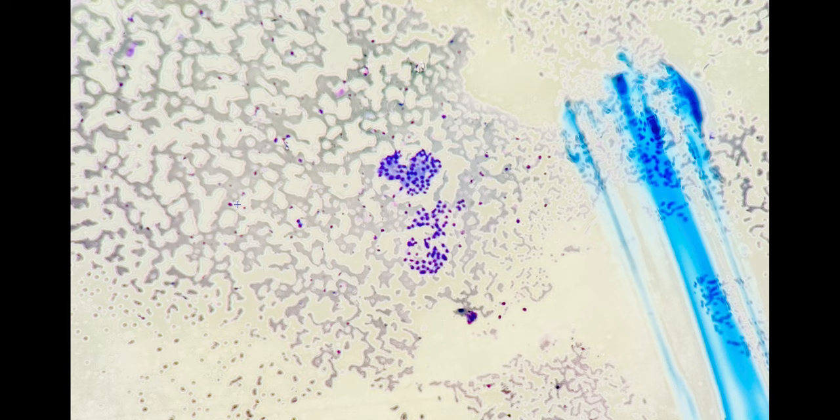Okay. Now let's talk about the thyroid. This is using the Bethesda classification system. And there are six categories. There's one, non-diagnostic or unsat. And this is when you have cyst fluid only or virtually acellular. And the management will be repeat FNA with ultrasound.